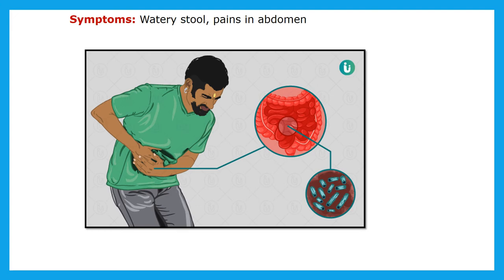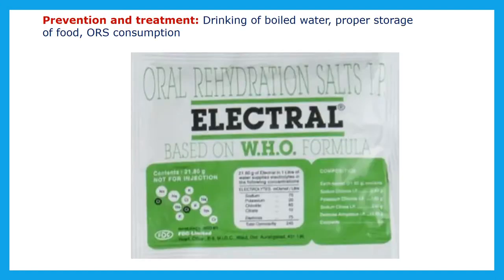Symptoms of dysentery are watery stool and pain in the abdomen. Prevention and treatment: drinking boiled water, proper storage of food, and ORS consumption — oral rehydration salt mixed in boiled water. After boiling and cooling that water, this ORS can be mixed in and given to the patient.